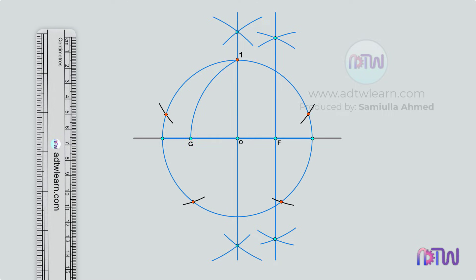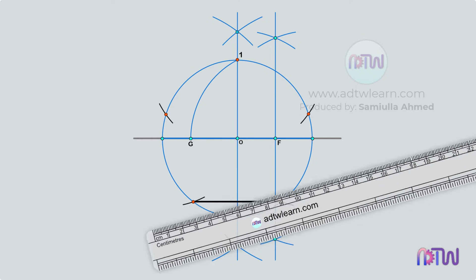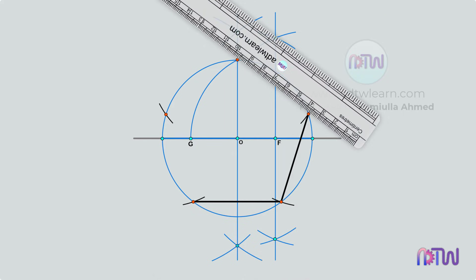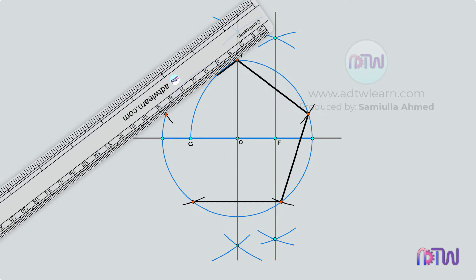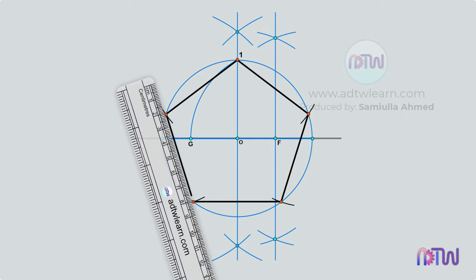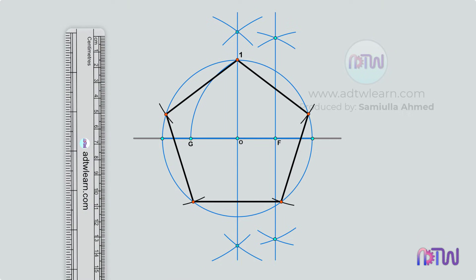These are the five corner points of the pentagon. Connect these points with a line using a ruler. This will be our final required pentagon.